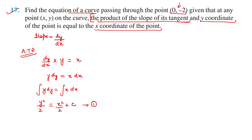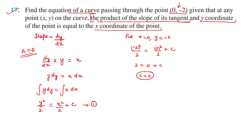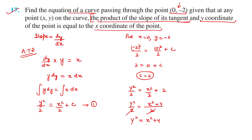The point given is (0,−2), so x = 0 and y = −2. Substituting: (−2)²/2 = (0)²/2 + C, so 4/2 = 0 + C, giving C = 2. Putting C = 2 back: y²/2 = x²/2 + 2. Multiplying through by 2: y² = x² + 4. This is the equation of the curve passing through (0,−2).